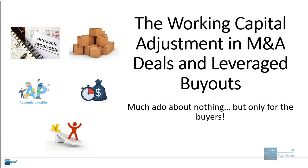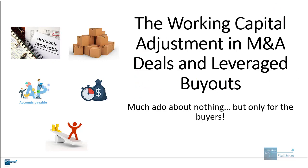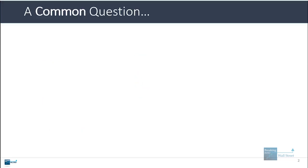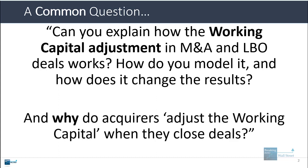Welcome to another tutorial video. This time we're going to go over a very specific topic: the working capital adjustment in M&A deals and leveraged buyouts. A very common question we get goes something like this: can you explain how the working capital adjustment in M&A and LBO deals works, how do you model it, how does it change the results, and why do acquirers adjust the working capital of target companies when they close deals?